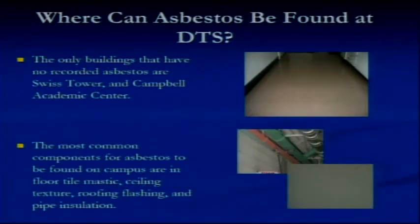The most common components for asbestos to be found on campus are in floor tile mastic, the glue that's holding the floor tile down, ceiling texture - not this ceiling texture, but the acoustical texture, roofing flashing, the flat bed of roofing and then the part that curls up against the wall, that typically has asbestos, and we do have that documented around campus, and pipe insulation.